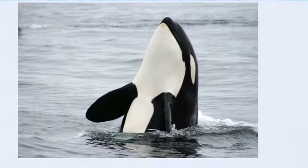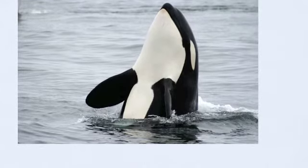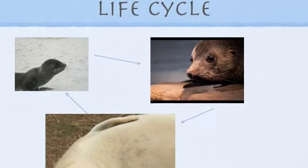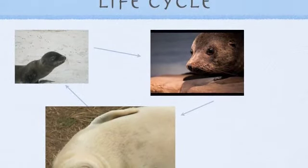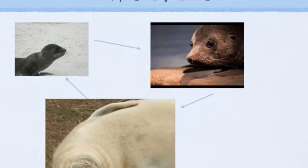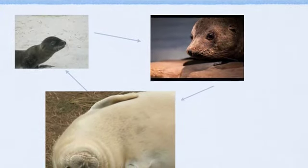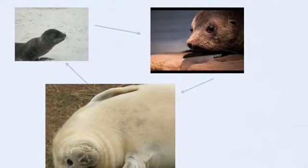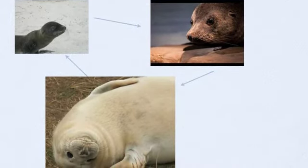A seal protects itself by wriggling to water. A seal's life cycle starts off as a baby. Then it grows into a young seal. Soon it can be a young adult. Then it grows into a fully grown seal.